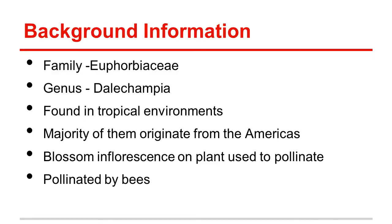For background information: Dalechampia vines are part of the family Euphorbiaceae, with the genus Dalechampia. They are found in lowland tropical environments, where there are over 120 different species. Ninety of them come from the Americas, and the other 30 come from Asia and Africa, specifically Madagascar. Dalechampia vines have unisexual flowers with bisexual blossom inflorescences that act as pollination structures. Most species in the Americas are pollinated by resin-collecting male bees, and about a dozen more species are pollinated by fragrance-collecting bees. In Africa and Asia, most plants are pollinated by resin-collecting bees.